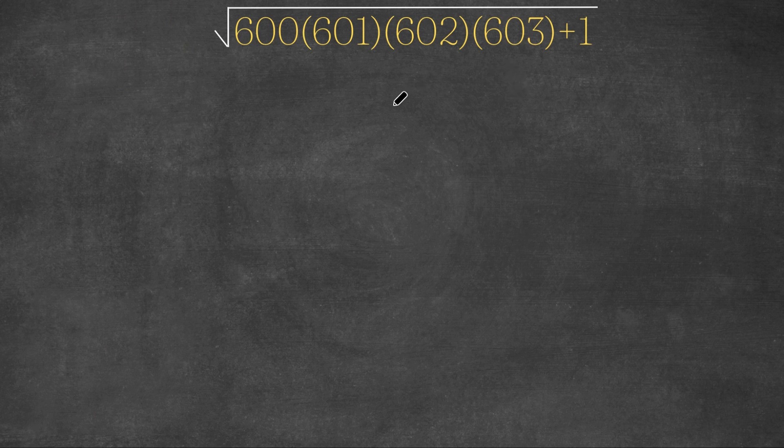As you can see, we have the square root of 600 times 601 times 602 times 603 plus 1. And if you notice, this is a consecutive set of numbers. We have 600, 600 plus 1 is 601, 601 plus 1 is 602, and 602 plus 1 is 603.